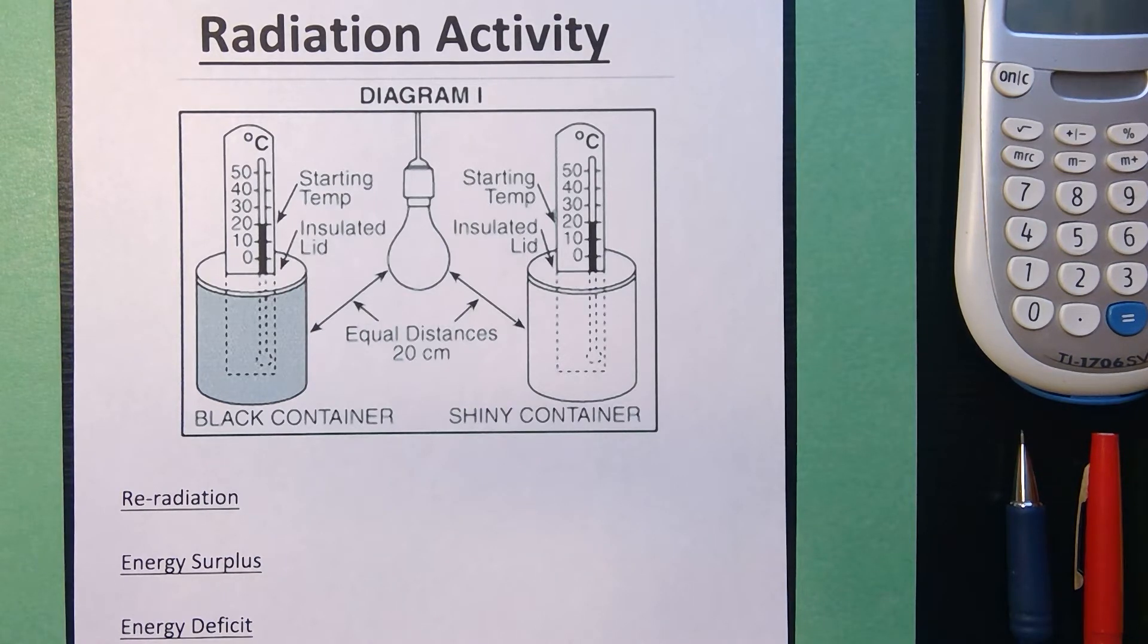Well, they're the same material. They're both aluminum. They're the same size. They're the same volume. The surfaces are different. The black container has a dark, rough surface. The shiny sort of silver container has a much smoother surface, plus it is much lighter in color.